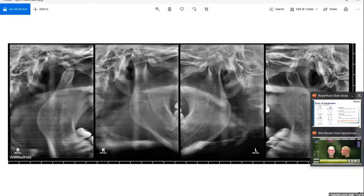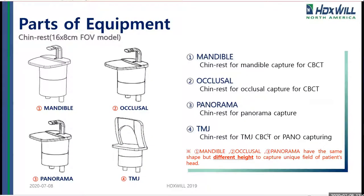For the 16x8, the field of view gets you from the bottom of the sinuses to the bottom of the chin. But in the back at the TMJ, you're right at the TMJ level at the bottom of the sinuses, so you may not encompass the full TMJ. With the smaller 16x8 model, we have the ability to have a TMJ positioner, which allows you to position the patient's head a little lower. This lets you focus on either the sinuses or the TMJ, getting a full view of the condyles and the joint itself.